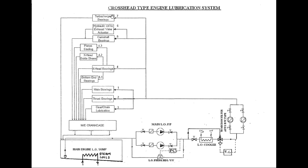Turbochargers do not have a separate lubrication system; they are invariably supplied from the main engine lubrication system. Lube oil provides cooling and lubrication to the turbocharger bearing. The oil outlet from the turbocharger bearing is normally led back to the crankcase through a side glass. From the engine crankcase, lube oil drains to the sump through strainer plates (sieves) provided at the bottom of the crankcase.